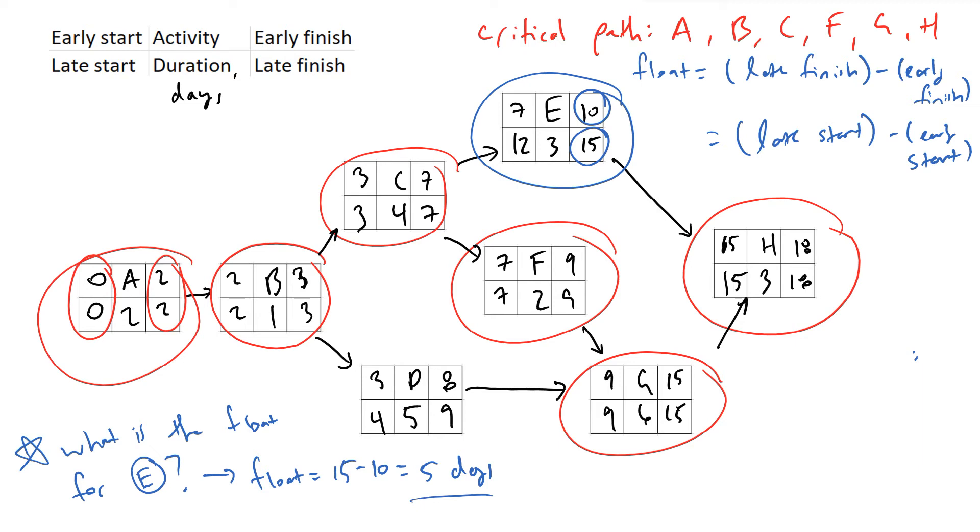And so what this 5 days tells us is that activity E can be delayed for up to 5 days and have no effect on our overall project.